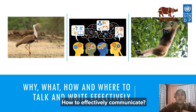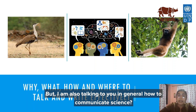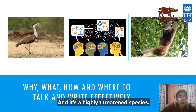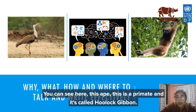How to effectively communicate — and I'll also be talking about how to communicate science in general. When it comes to wildlife, you can see here this bird — this is the Great Indian Bustard, and it's a very highly threatened species. You can also see here this ape, a primate called the Hoolock Gibbon.